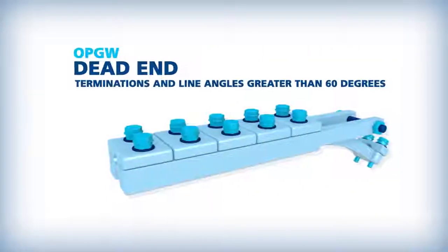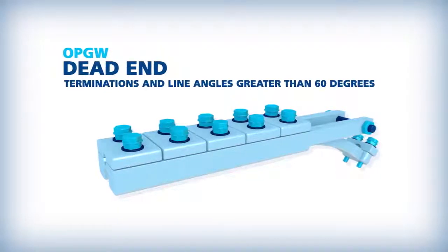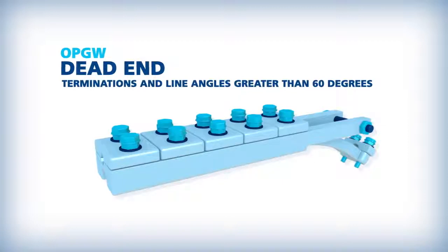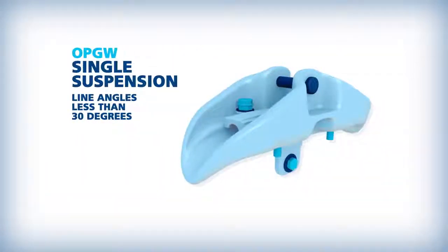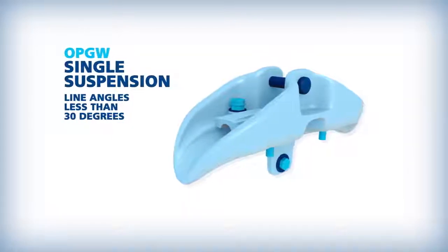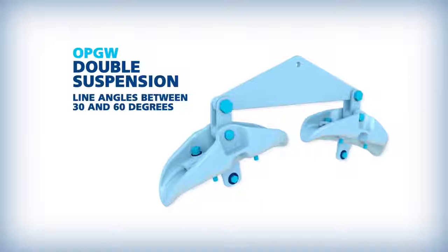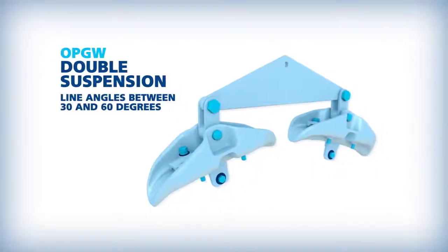Dead ends are used on structures where the OPGW terminates to be spliced, where the line angle is greater than 60 degrees, as well as road, river, and rail crossings. Single suspension clamps are used on structures where the line angle is less than 30 degrees, and double suspensions can be used on structures when the line angle is between 30 and 60 degrees.